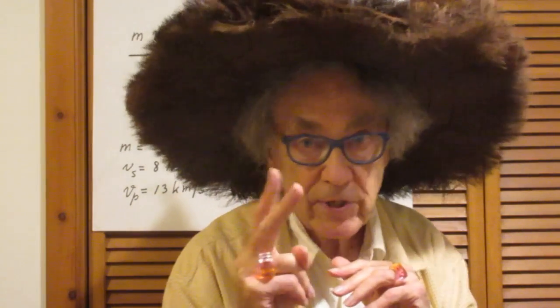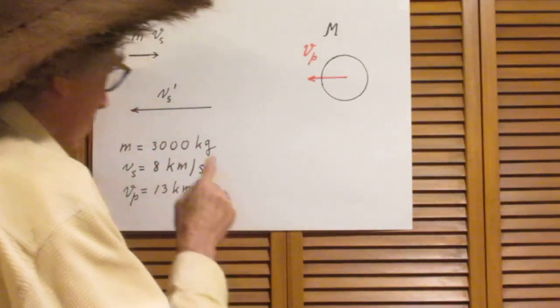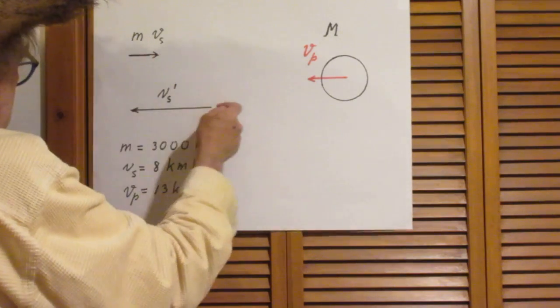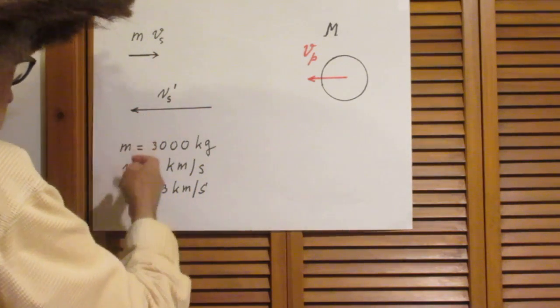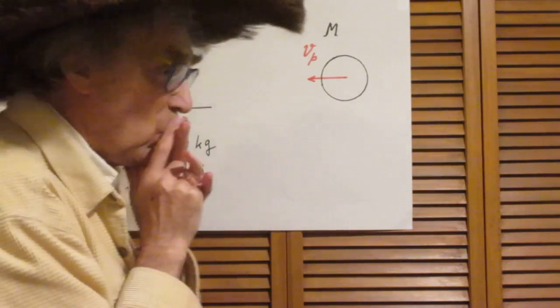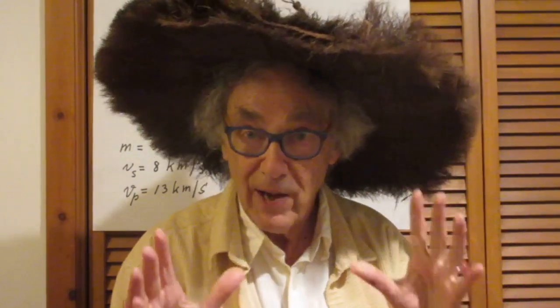So I want the answer of Vs prime in kilometers per second, and two-digit precision. So it was 8 kilometers per second here and here it is higher. Two-digit precision and you can treat it as a perfect elastic collision. So in a way it's a simple problem.